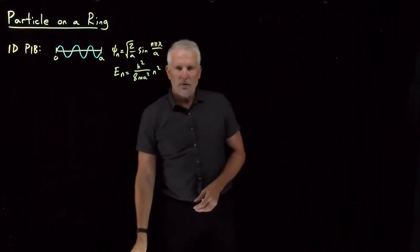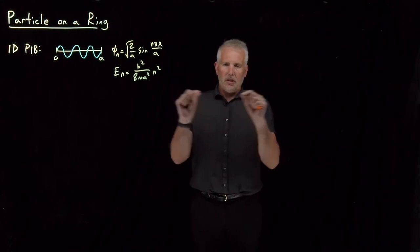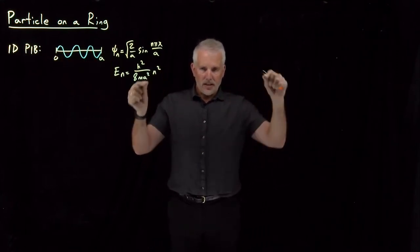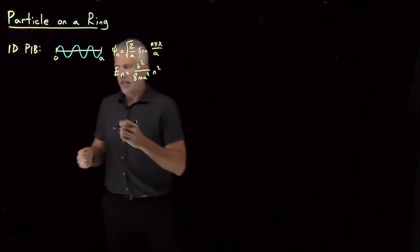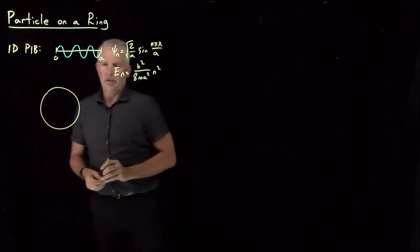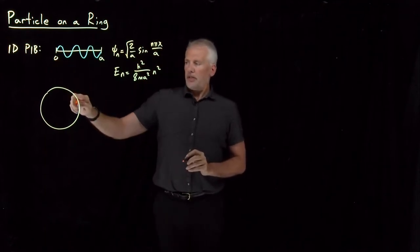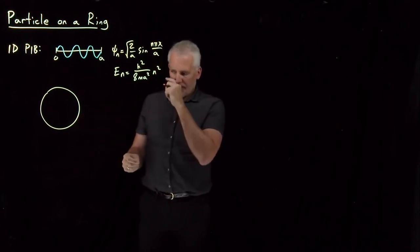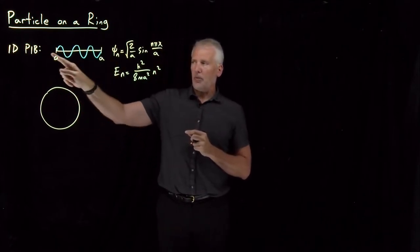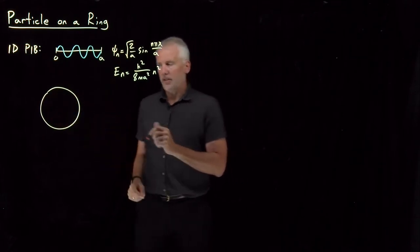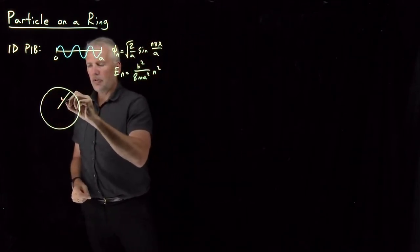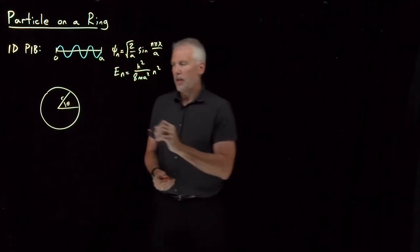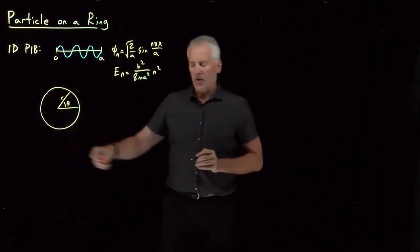Now let's consider a different problem. Let's still confine our particle to a one-dimensional line, but now let's take that line and bend it — bend it all the way around until it forms a circle. So the length A is now the circumference of a circle. To describe where the particle is, instead of describing where it is along the x-axis, I'll describe at what angle I find it. This circle has some radius r, and I can use theta to describe the angle around that circle.